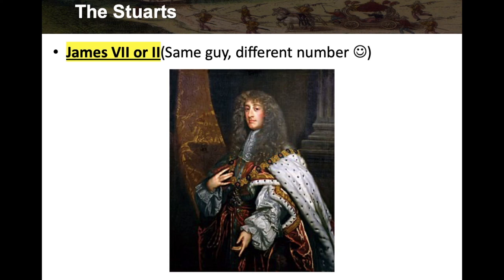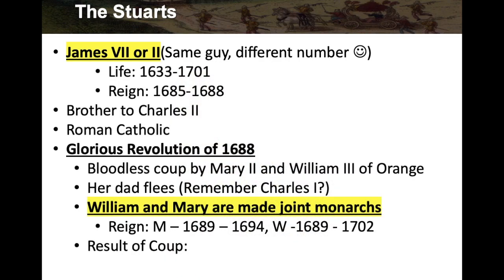James VII or II — same guy, different number — lived 1633 to 1701, and his reign was 1685 to 1688. You can see the clothing becoming more elaborate — robes, furs, big hair. He was the brother of Charles II and was Roman Catholic. His reign ended before he died, which is unusual since normally the reign ends when they die. He only reigned about three years.